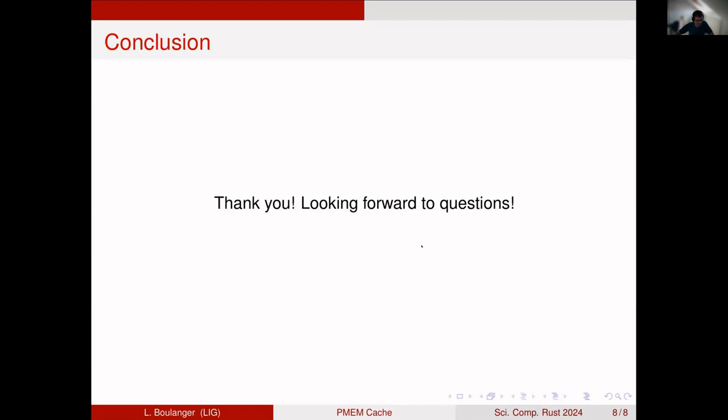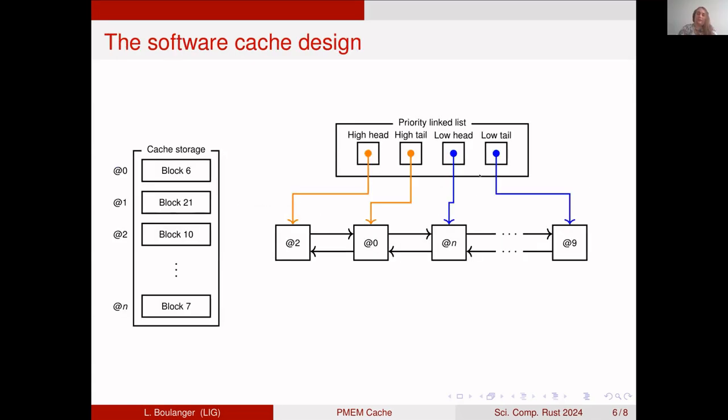Let me see if there's any questions in the Q&A now. Yes, there's one: Is the data structure of the cache queue somehow protected against corruption in case of power loss? Yes, it's a very good question.